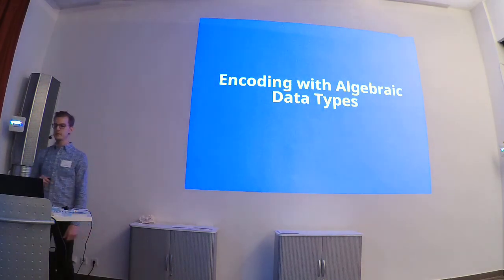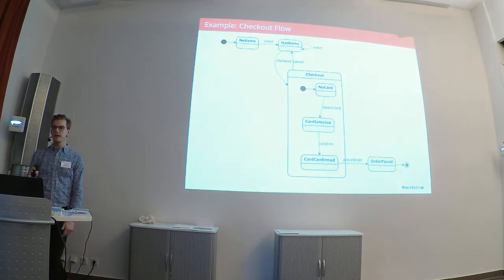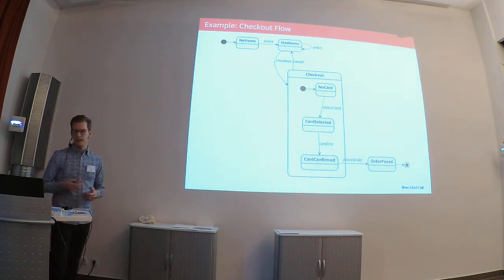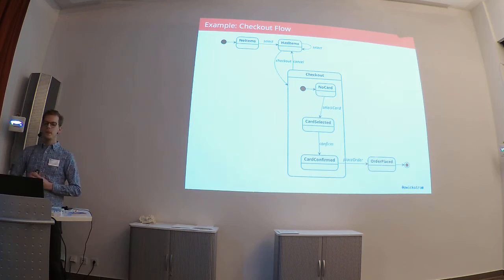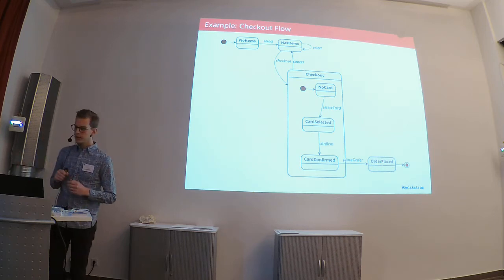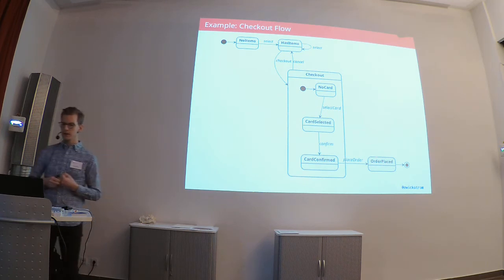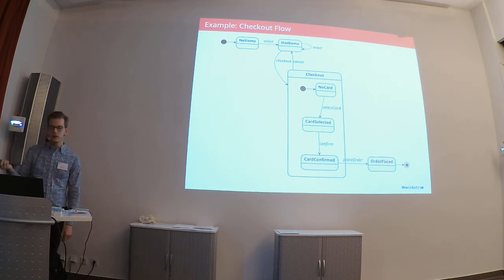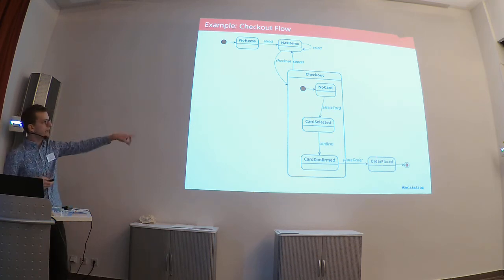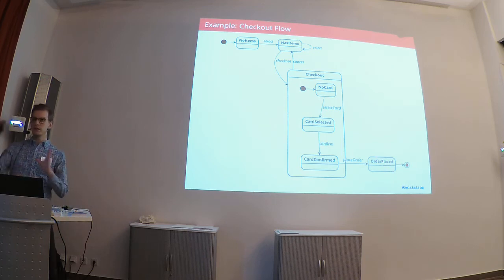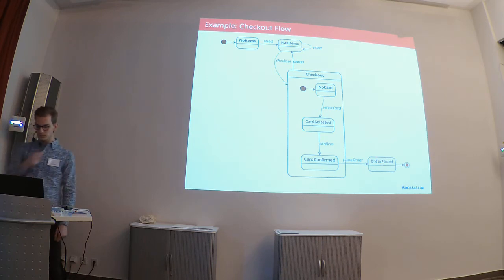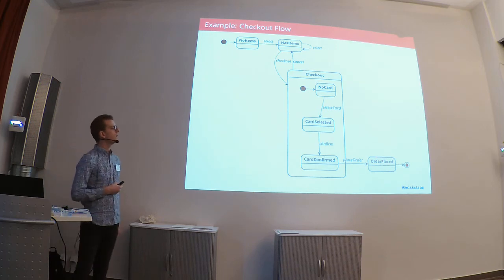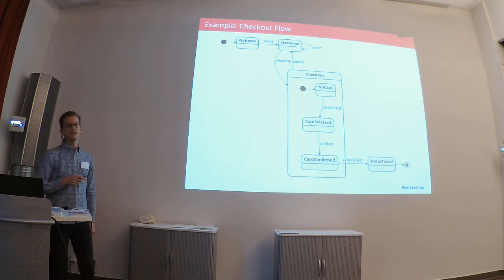This part is encoding with algebraic data types. This is our real-world example that I'll be basing my code examples on — I took this from my work project and made it a bit simpler. It models a shopping cart checkout, like an e-shop thing. We begin with having no items in our cart, then we can add one or more items, and then after that we can checkout. All the states in the checkout box can be cancelled from, so that's why they're in a box with one cancel arrow going back. When we have selected a card and confirm that, we can place the order and then we're done.